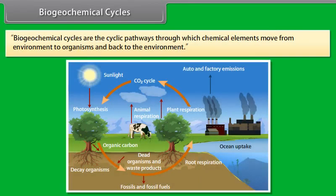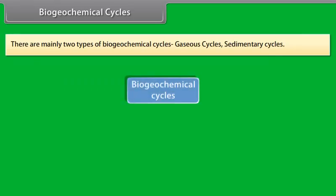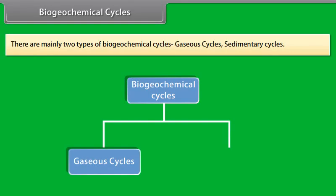Biogeochemical cycles. Biogeochemical cycles are the cyclic pathways through which chemical elements move from environment to organisms and back to the environment. Biogeochemical cycles are essential because the earth and its environment with reference to these elements are called closed system and there is no inflow of such elements from outside the earth and their amounts are limited. There are mainly two types of biogeochemical cycles: Gaseous cycles and Sedimentary cycles.